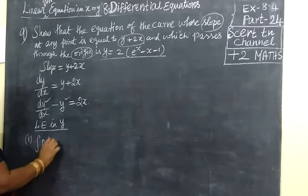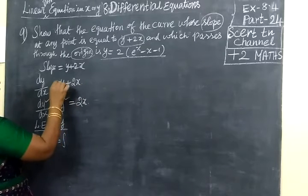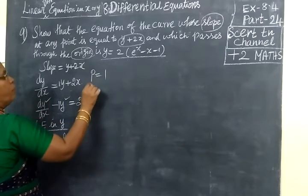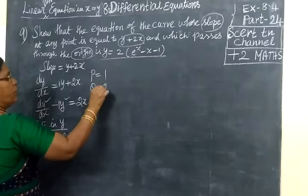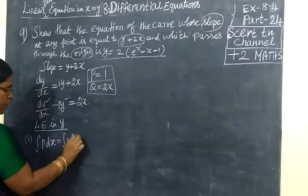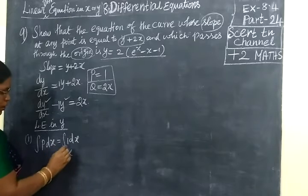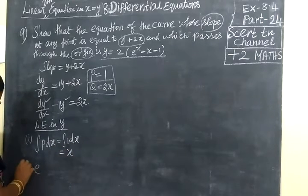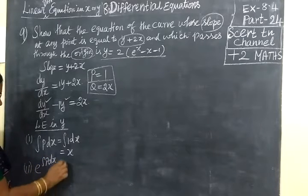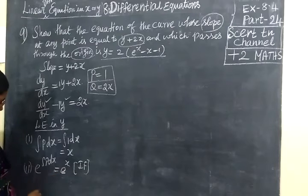Integral P dx. Here P equal to -1, so integral P dx equal to integral -1 dx, which is equal to -x. Then e power integral P dx equal to e power -x. So this is nothing but the integrating factor IF.